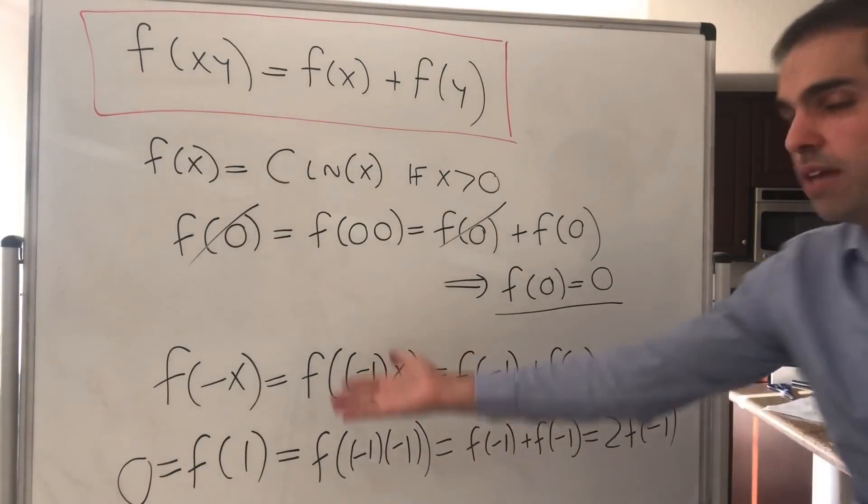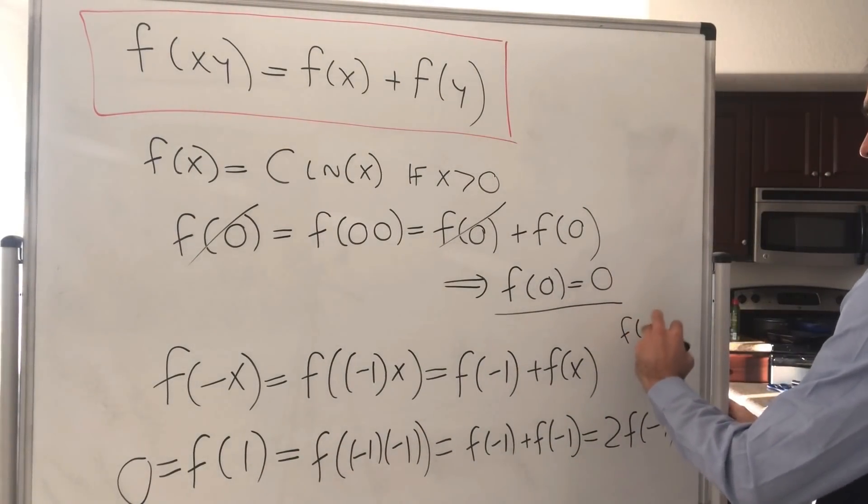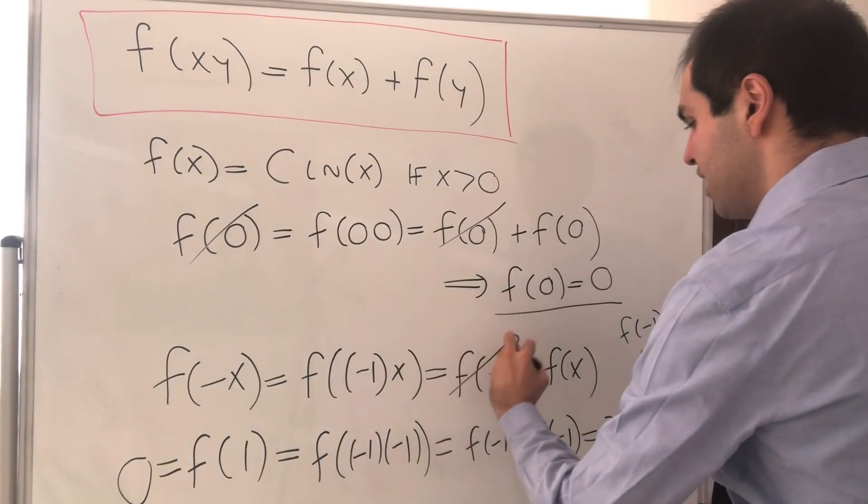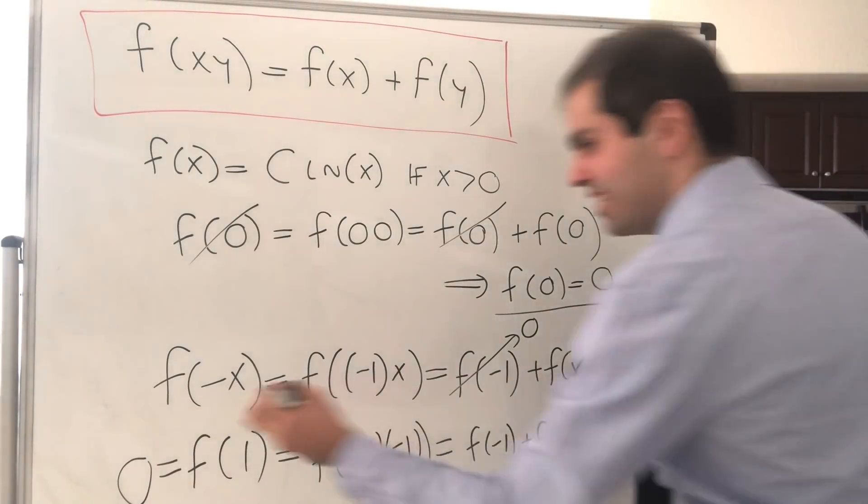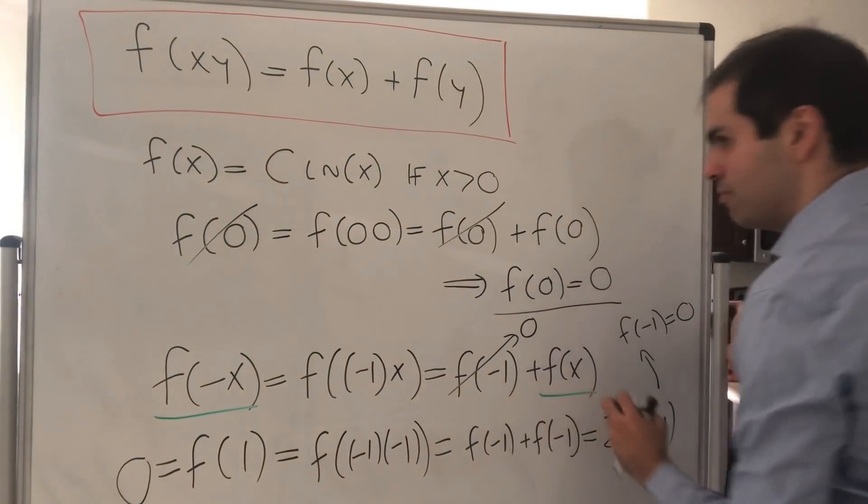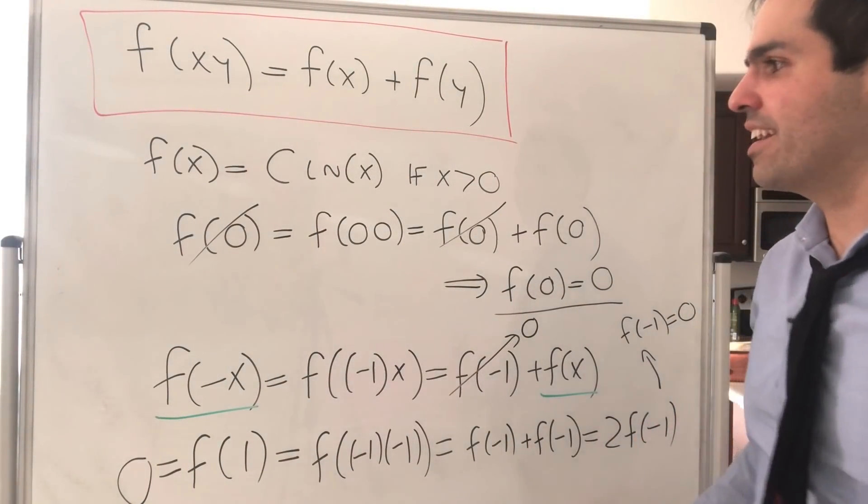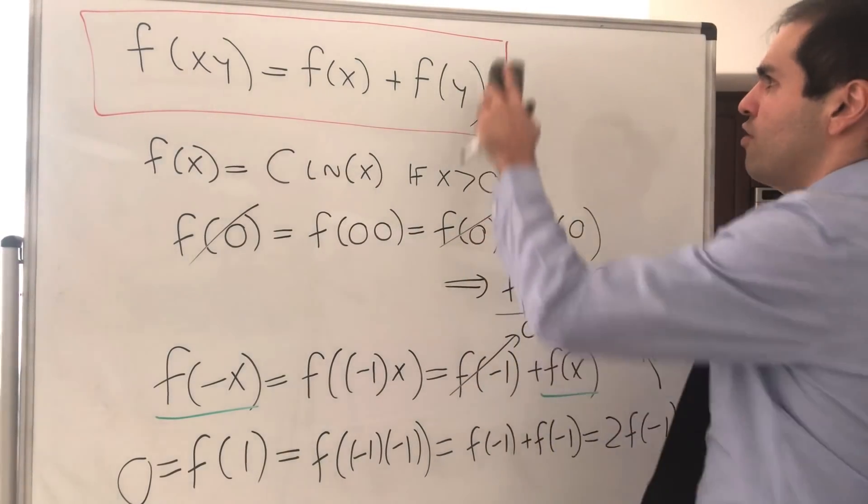And so 2 times f of negative 1 equals 0, and in particular, f of negative 1 is 0, which basically tells us that this cancels out, and we get that f of negative x equals f of x. So actually, this becomes an even function automatically, and with this we can finally say what our function is.